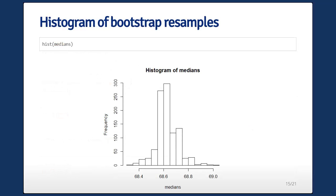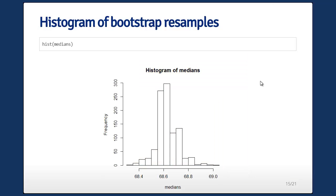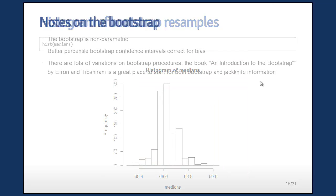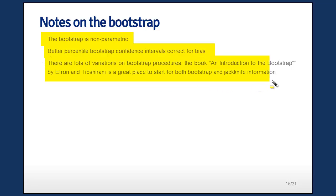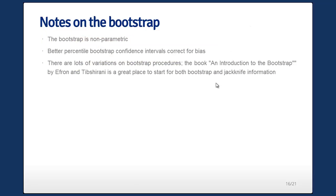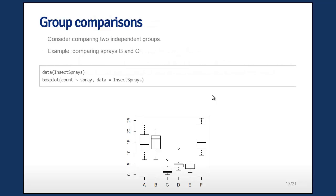One thing you almost always want to do after creating your bootstrap sample is draw a histogram and see what the approximated sampling distribution of your statistic looks like. Some notes on the bootstrap: it's a nonparametric technique. There are better percentile confidence intervals that correct for bias, and there are lots of variations on the bootstrap. See the book An Introduction to the Bootstrap by Efron and Tibshirani — it's the classic reference.